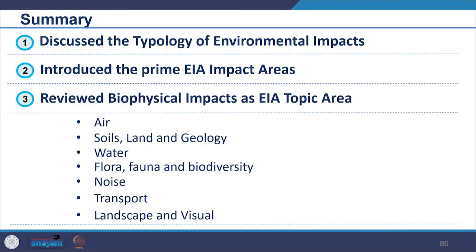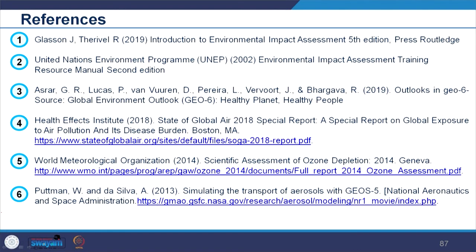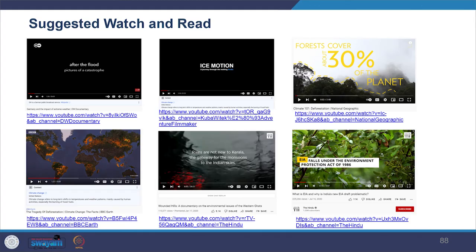Summarizing this lecture: we looked into the typology of environmental impact, introduced a range of impact areas generally addressed through the EIA process, and focused on the biophysical environment topics — air, soil, land and geology, water, flora, fauna and biodiversity, noise level, and landscape and visual. These were the references for this session, with the key textbook mentioned along with suggested watch and read materials.